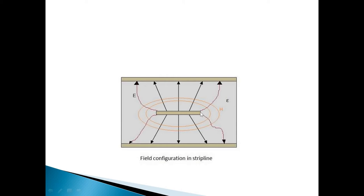The voltage is applied between the center strip and a pair of ground planes. As soon as the voltage is applied, current starts flowing down the center strip and returns via the ground planes.